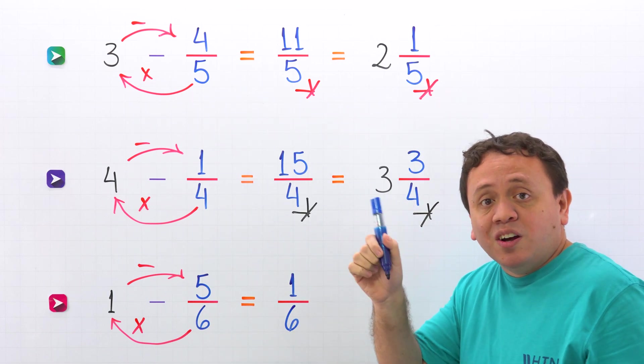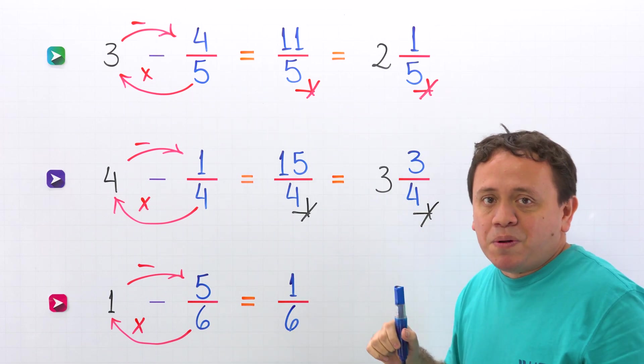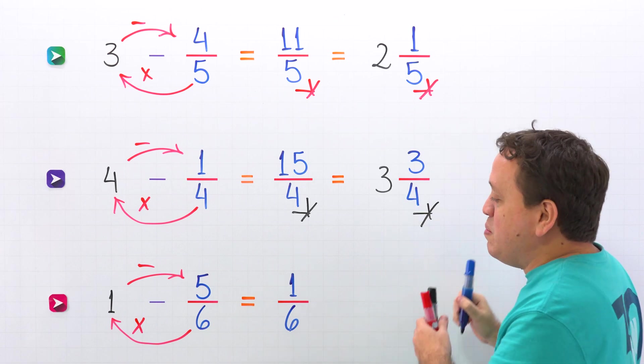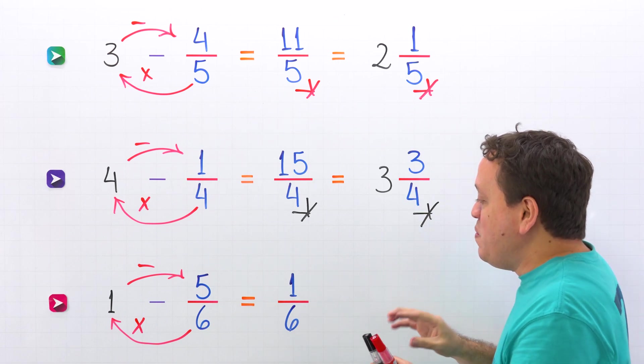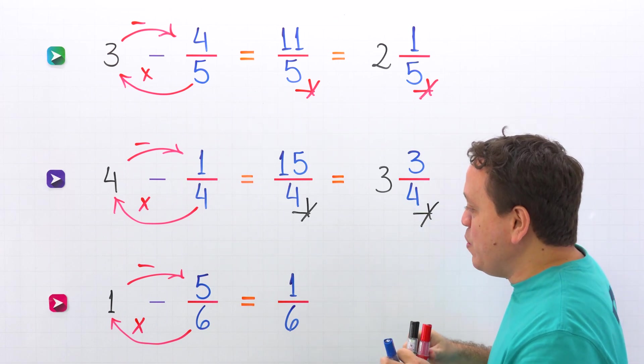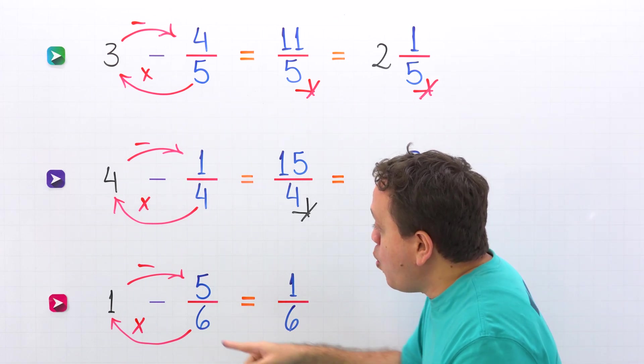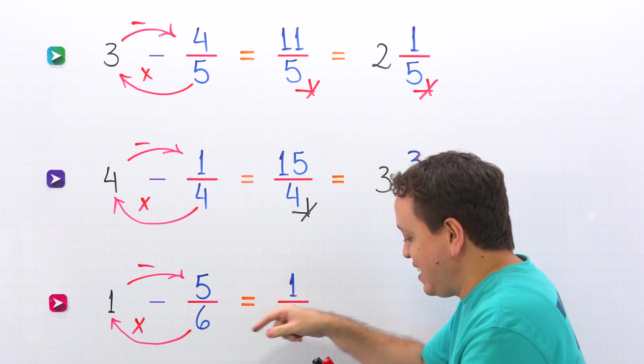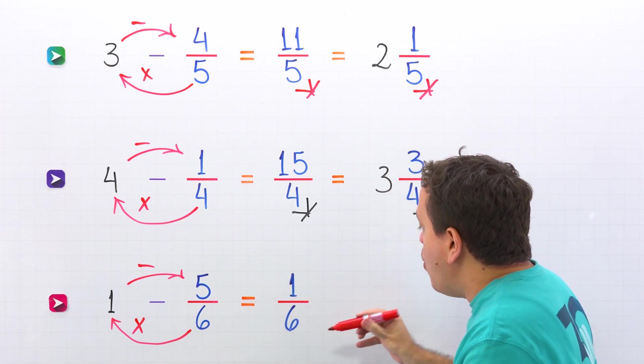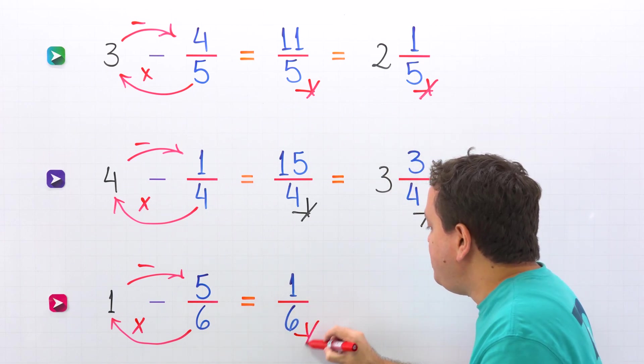And we cannot convert proper fractions to mixed numbers. So we are done. In that way, 1 minus 5 sixths gives us 1 sixth.